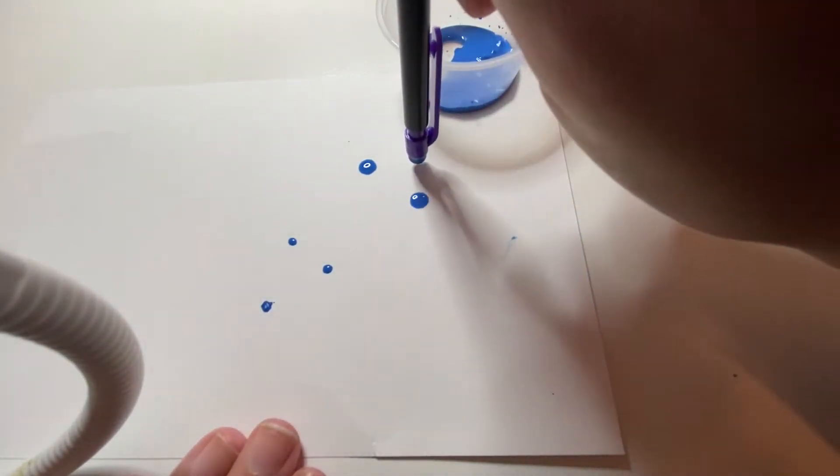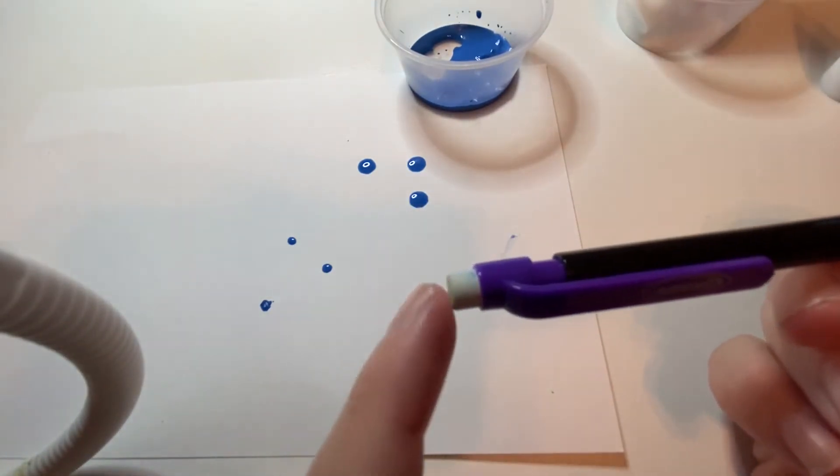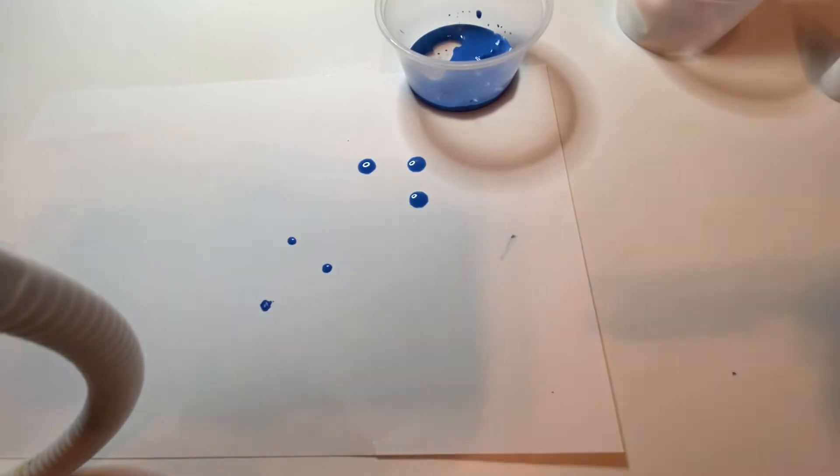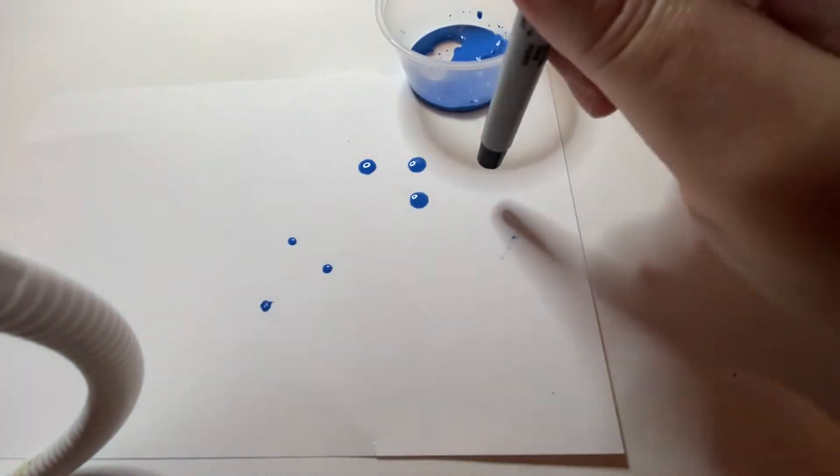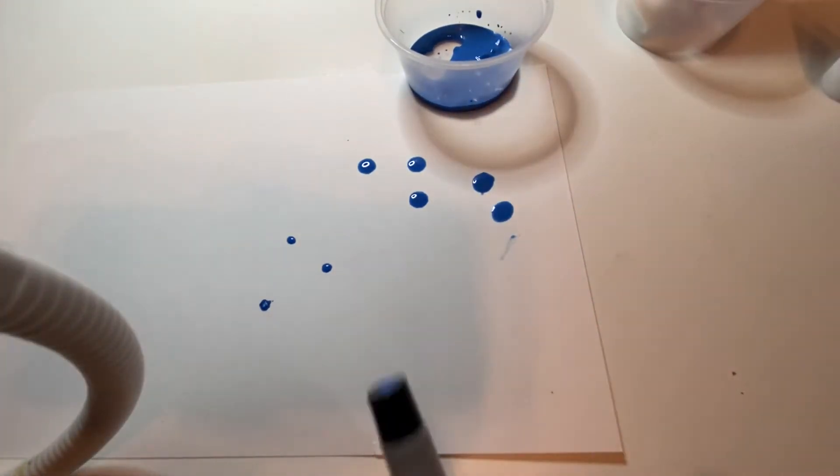So here it is with the pencil. Nice little perfect circles. And the reason why I have different tools here is because you want to have a different variety of shapes.